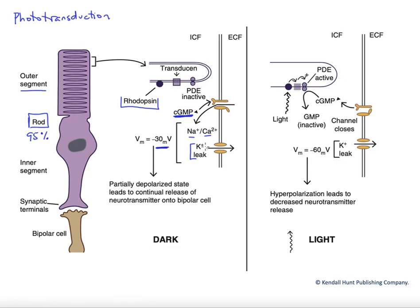It's negative because the potassium leak is still the dominant flow here, but it's still partially depolarized. And that depolarization leads to the release of our neurotransmitter glutamate onto our bipolar cell.